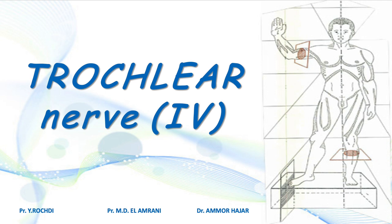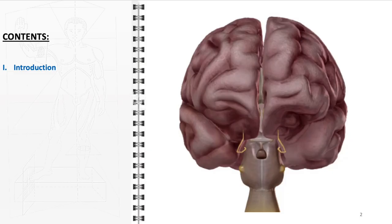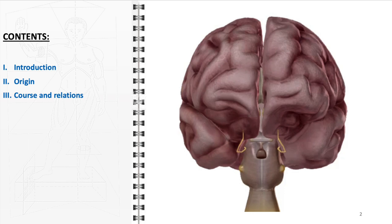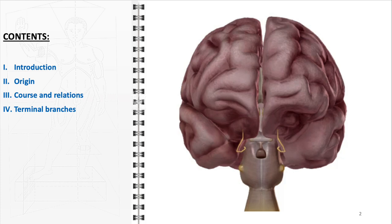In this video, we will delve into the detailed anatomy of the trochlear nerve, also known as cranial nerve 4. We will begin with a comprehensive overview, focusing initially on its origin, course, and its intricate relations with adjacent anatomical structures. Following this, we will delve into the division of the nerve into its terminal branches, highlighting how this division facilitates effective innervation of the superior oblique muscle.